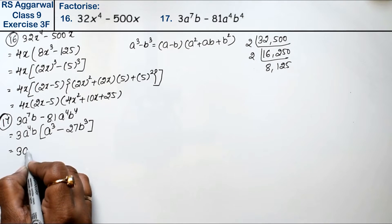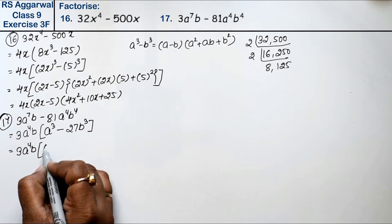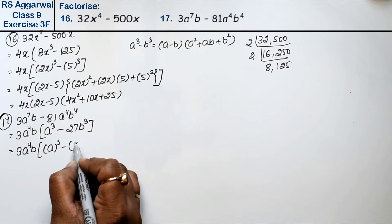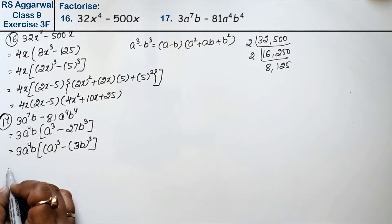So we have 3a^4b. How can we write this? As a³ minus (3b)³.